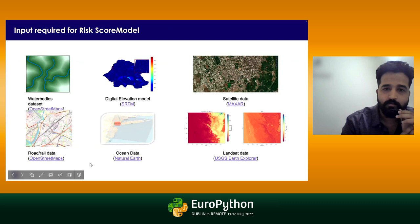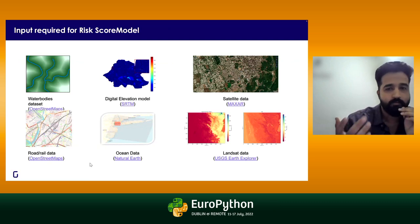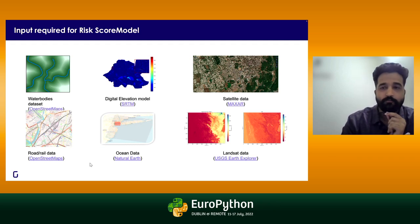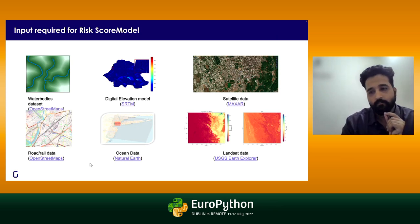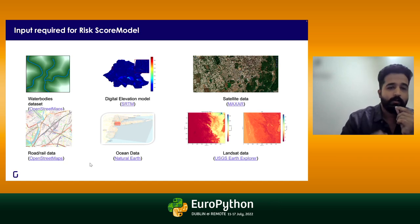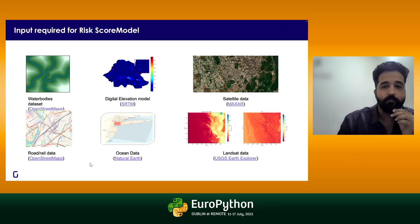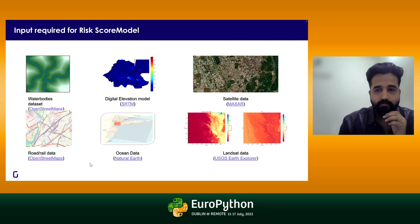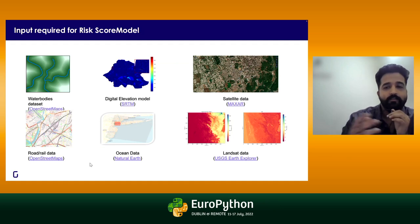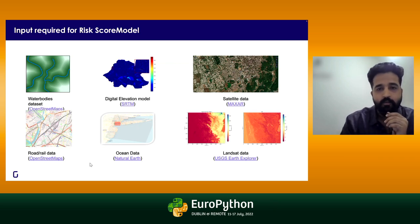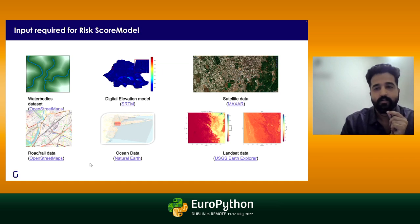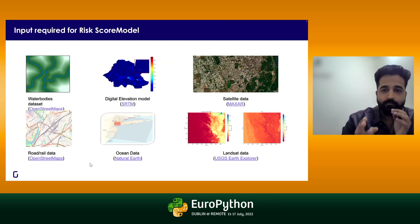We need to take care of whether there are any water bodies present, what is the digital elevation model (which talks about topography of the surface), and we also need high-resolution satellite imageries to identify building footprints. We need ocean boundary data over the past 10 years, road networks for evacuation, and Landsat data which helps calculate indices for vegetation, water bodies, and impervious surfaces.